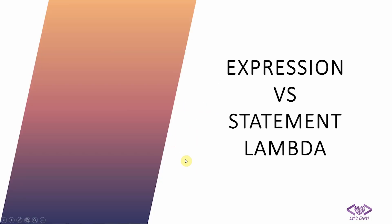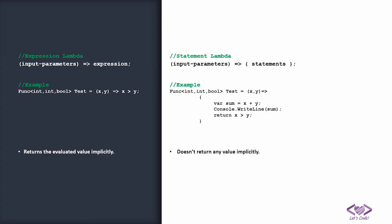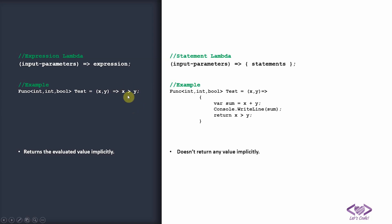Next we'll understand the difference between an expression lambda versus a statement lambda. An expression lambda is when on the left of the operator there are input parameters and on the right side there is an expression. For example, defining a function which takes two integers and returns a bool — with x and y as the two int variables and the body having x > y. The output of this expression is returned implicitly — it returns the evaluated value implicitly.